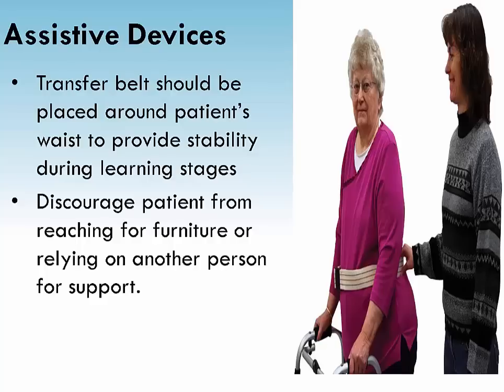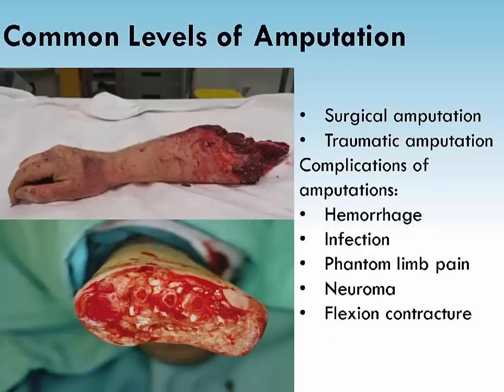A transfer belt provides a secure handle for holding the patient. The nurse should assume a broad stance, not keep feet close together, as that would narrow the base of support. Instructing a patient to encircle the nurse's waist would cause the nurse to be off balance. Activities that cause hips to bend greater than 90 degrees, twisting or crossing the legs, and internal or external hip rotation should be avoided to prevent dislocation of a prosthetic hip. The legs should be abducted to prevent hip prosthesis dislocation, and hip precautions should continue for three to four months.